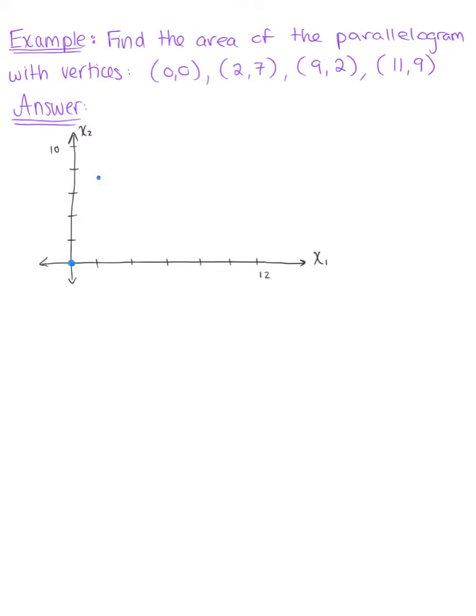So right about here at 2, 7. We then have another vertex at (9,2). And then last but not least we have a vertex at (11,9).